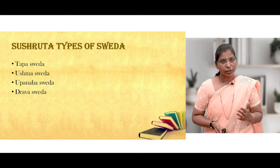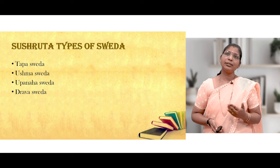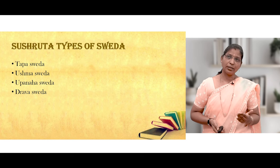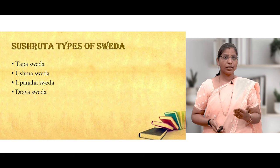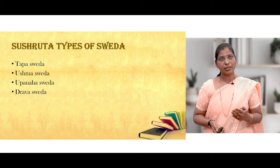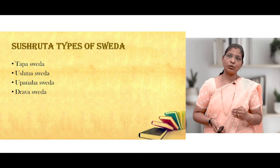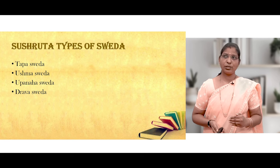According to Acharya Sushruta, he divided Swedana into four major types: Tapa Sweda, Ushma Sweda, Upanha Sweda, and Drava Sweda.